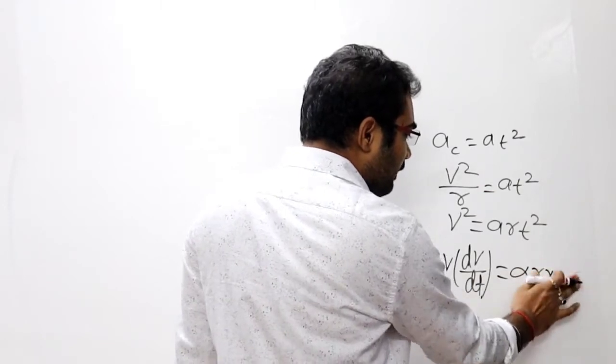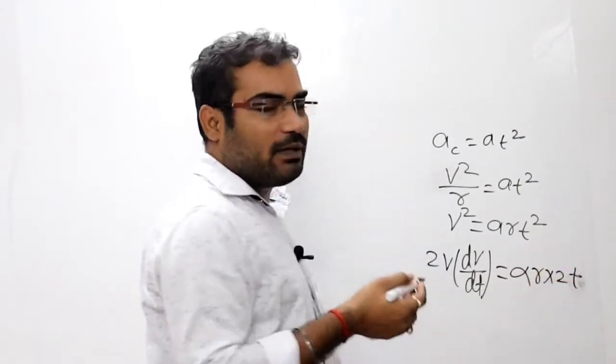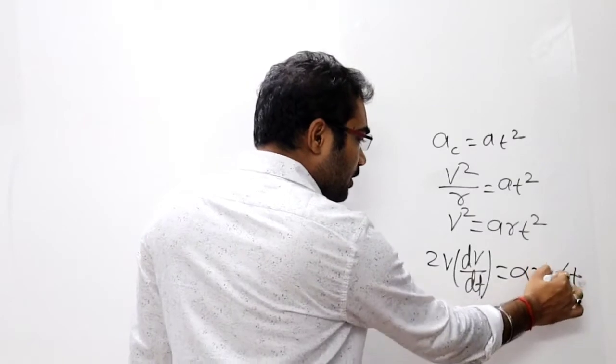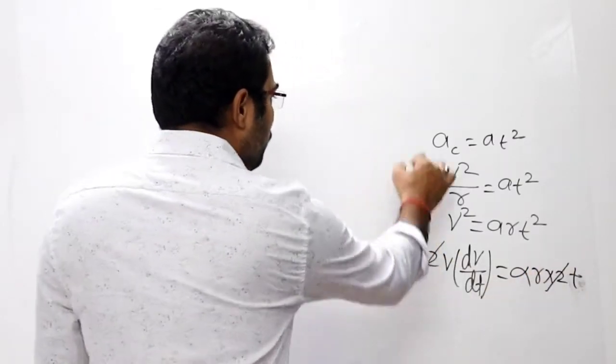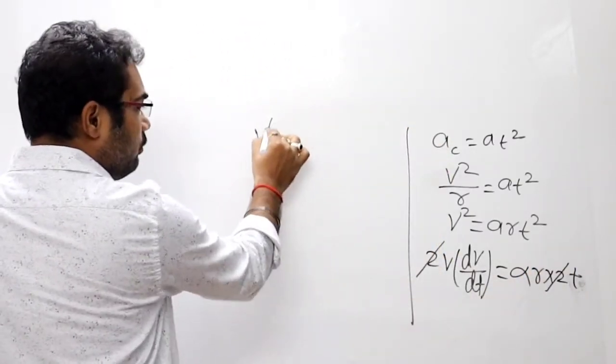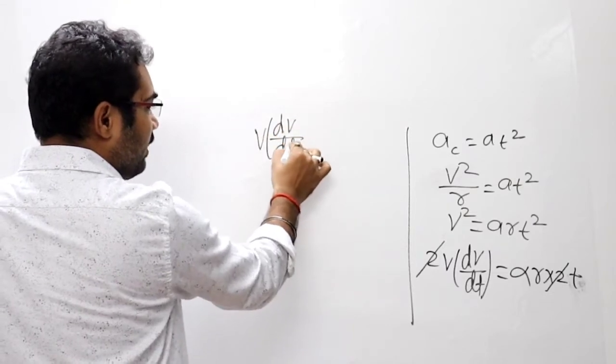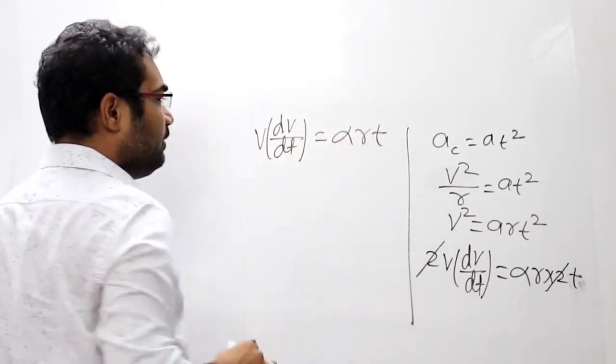That is equal to alpha R into T. Toh isko kya diya hua hai - toh yeh 2 cancel out ho gaya. Toh yaha pe V into dV by dt ka jo equation aega, that is equal to alpha R into T.